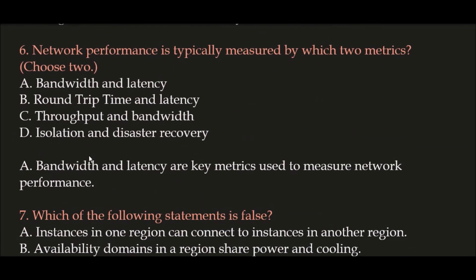Question 6: Network performance is typically measured by which two metrics? Option A: Bandwidth and Latency, Option B: Round Trip Time and Latency, Option C: Throughput and Bandwidth, Option D: Isolation and Disaster Recovery. The correct answers are Option A — bandwidth and latency — because these are the key metrics used to measure network performance.